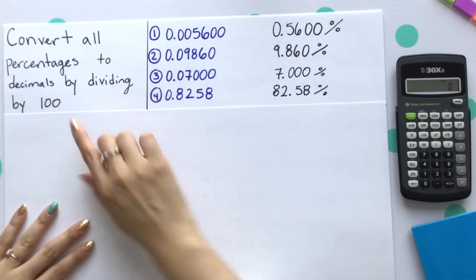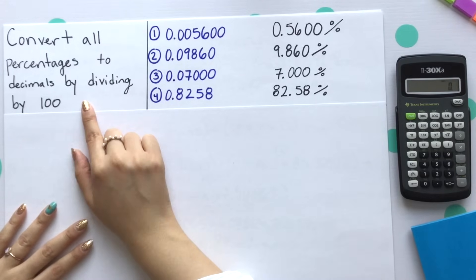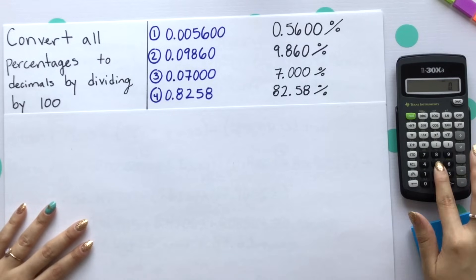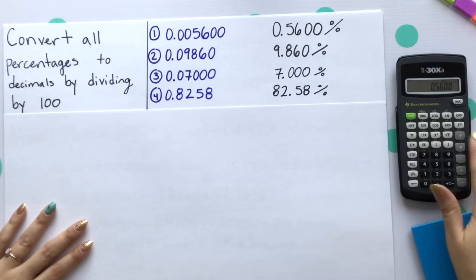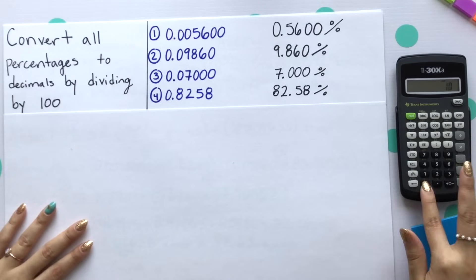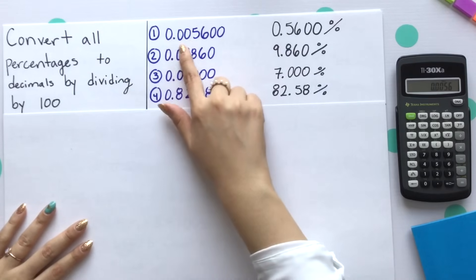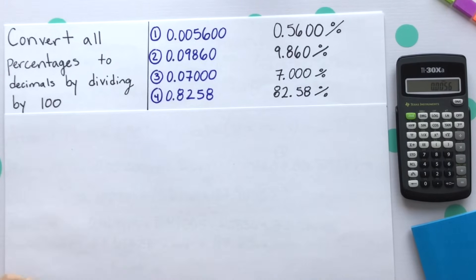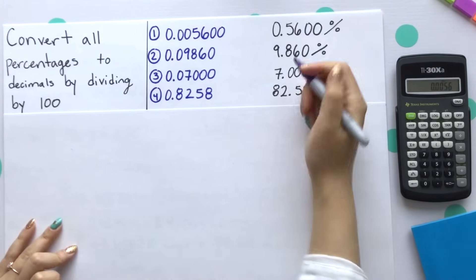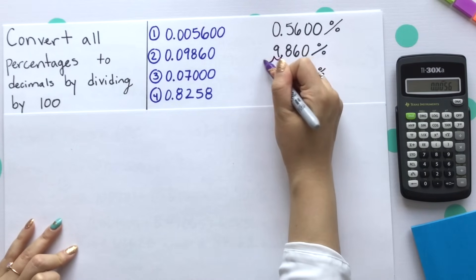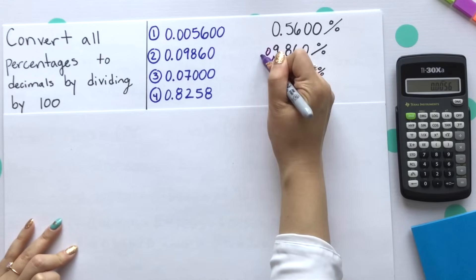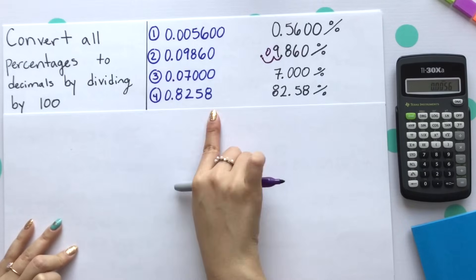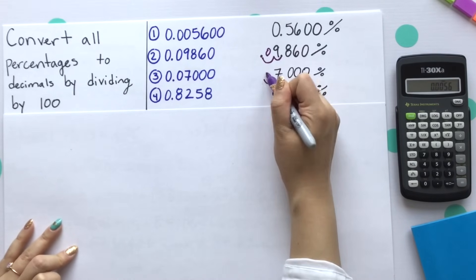Step one is to convert all percentages to decimals by dividing by 100. You're first given 0.5600. We'll divide that by 100 and you get 0.005600. There's a trick for this — what we can instead do is move the decimal place over twice to the left for every single percentage to get our decimal form, and we'll see it gives us our answer.